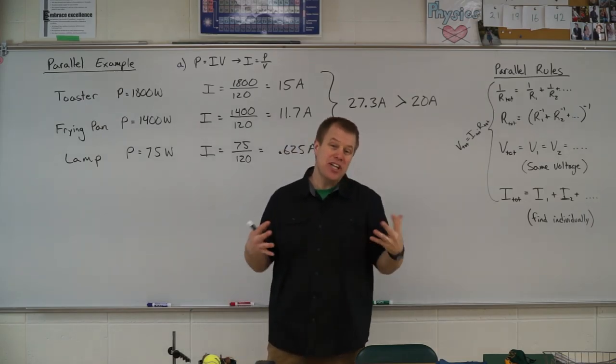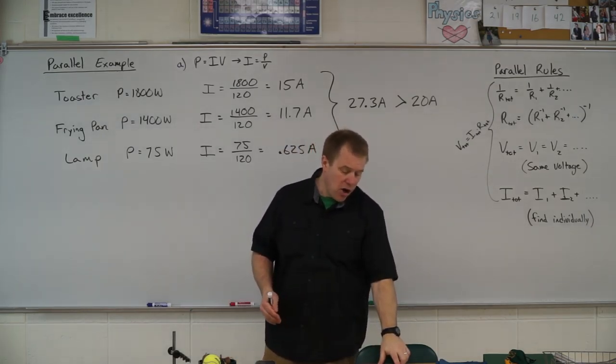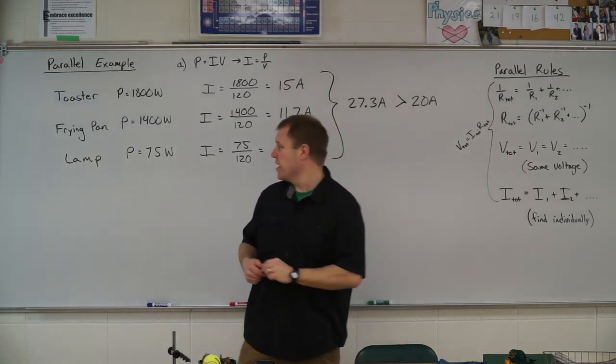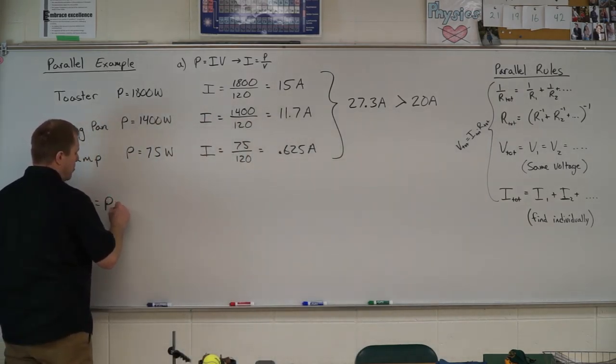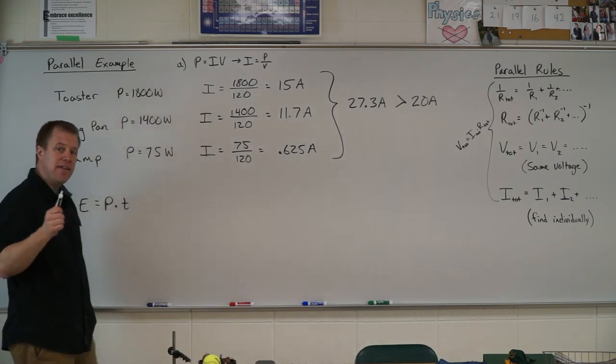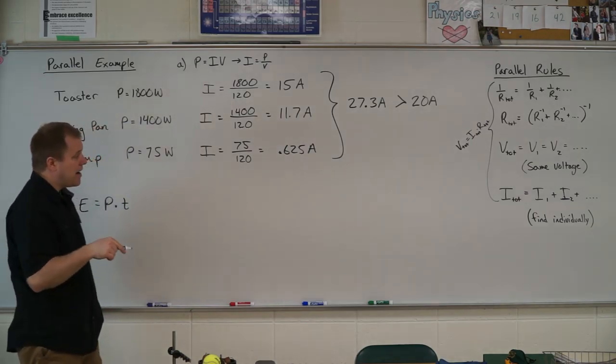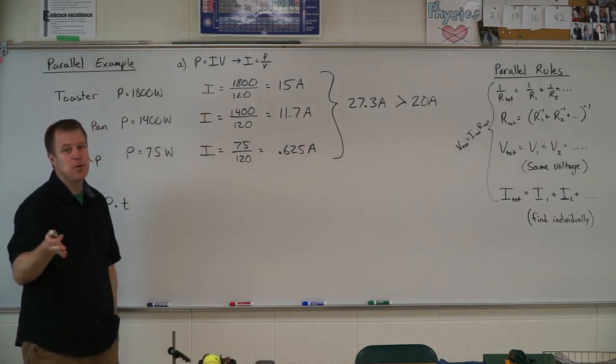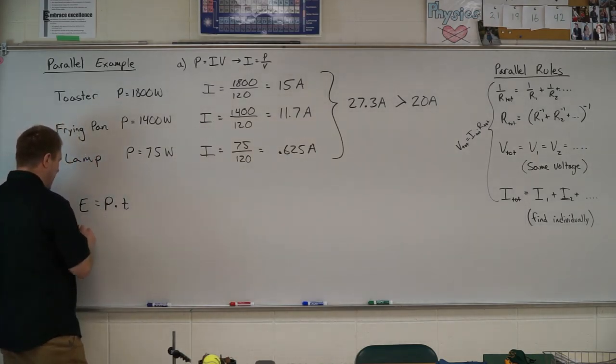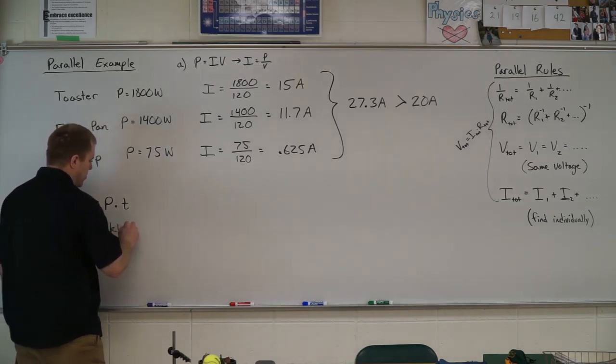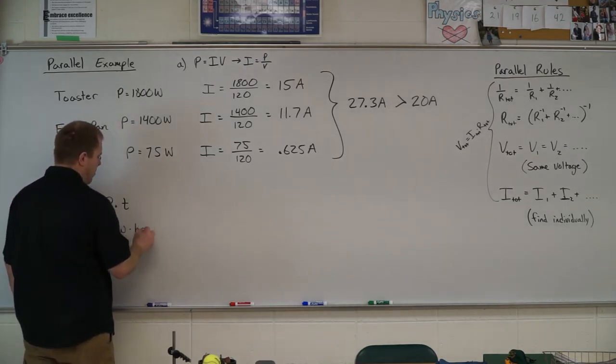Part C wants to know how much would it cost for 10 minutes. Now I'm using the idea that energy equals power times time. The thing here is my rate is 10 cents per kilowatt hour, meaning I need to find energy in kilowatt hours. So I need my power in kilowatts and my time in hours.